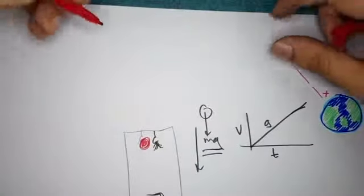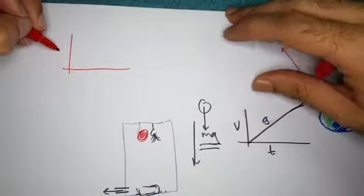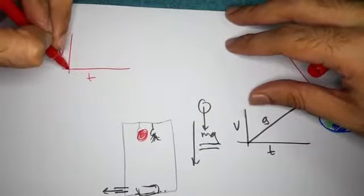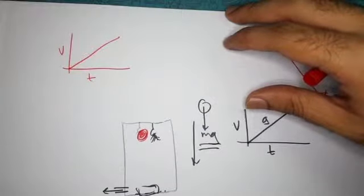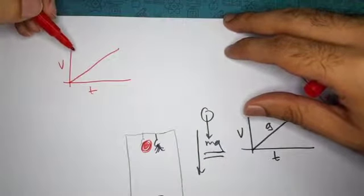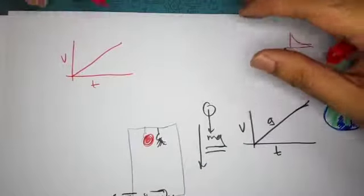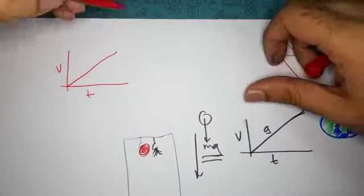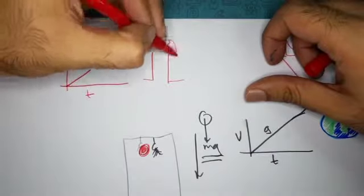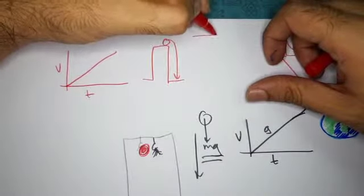Coming back to the concept of terminal velocity. If you have the velocity versus time graph and if it's an object traveling through a vacuum, then it would be a straight line. However, this is not what we see when you drop something in air. In the questions, they're going to say something like drop from a great height, or drop from a building, or drop from a tall building, or drop from a plane — box drop from plane.